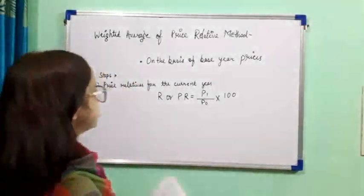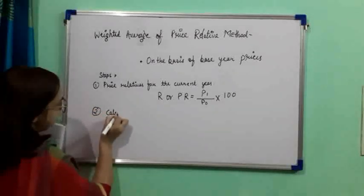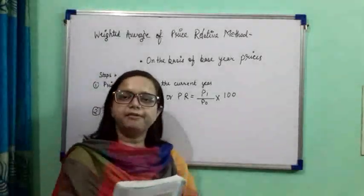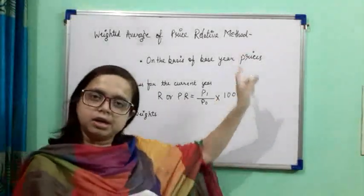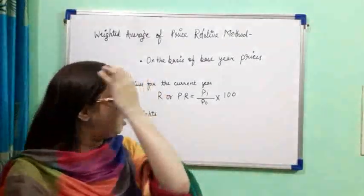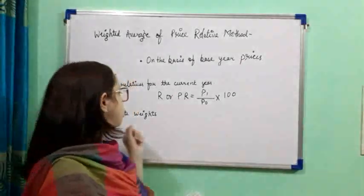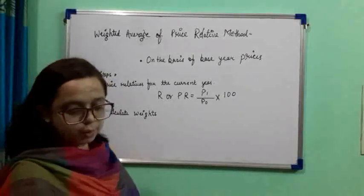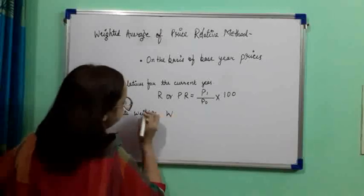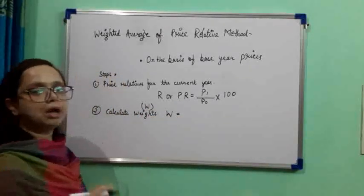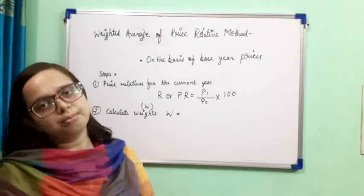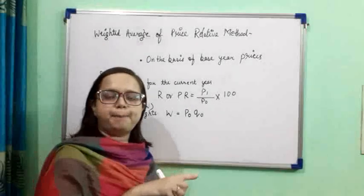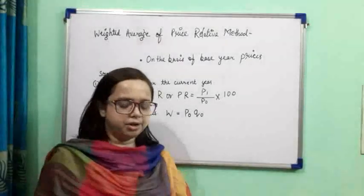Second, we need to calculate the weight W. If the weight is not given in the question, we have to calculate it. Weights are calculated by finding the product of the price of the base year and the quantity of the base year. That means W = P0 × Q0 — multiplication of the price and the quantity of the base year.